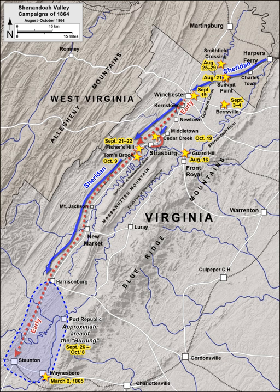The Valley Campaigns of 1864 were American Civil War operations and battles that took place in the Shenandoah Valley of Virginia from May to October 1864. While some military historians divide this period into three separate campaigns, they interacted in several ways, so this article considers all three together.